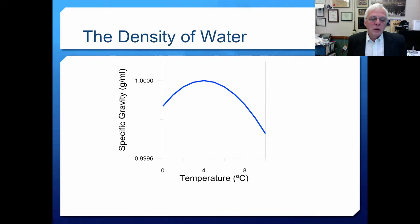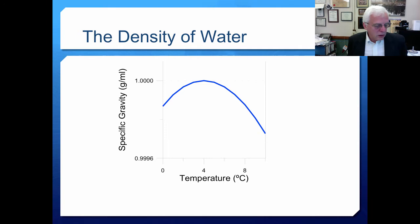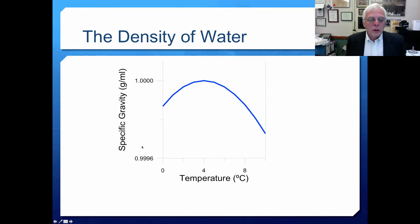You will recall that we talked about one very special aspect of water - its specific gravity or density, shown here in grams per milliliter or grams per cubic centimeter. On the x-axis you see temperature over a range from zero to ten degrees Celsius - zero being the freezing point. The specific gravity hits a maximum at about four degrees Celsius, which we discussed already in the miracles session.